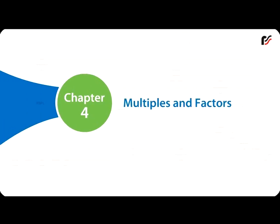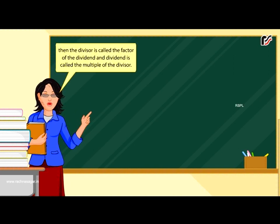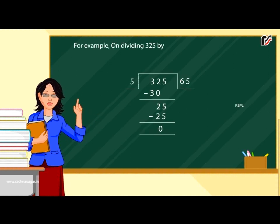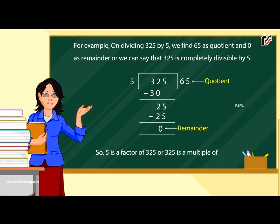Chapter 4: Multiples and Factors. When a divisor divides a number such that there is no remainder left, then the divisor is called the factor of the dividend, and the dividend is called the multiple of the divisor. For example, on dividing 325 by 5, we find 65 as quotient and 0 as remainder, or we can say that 325 is completely divisible by 5. So, 5 is a factor of 325, or 325 is a multiple of 5.